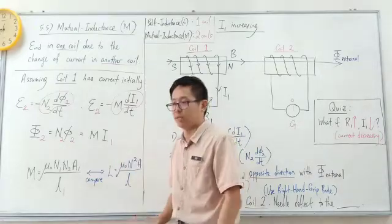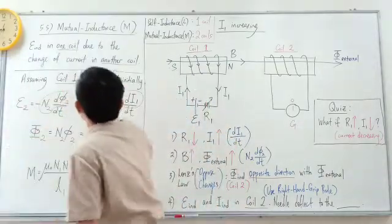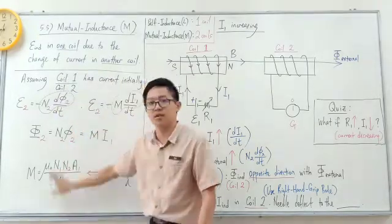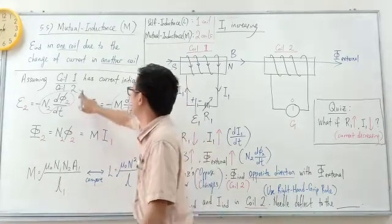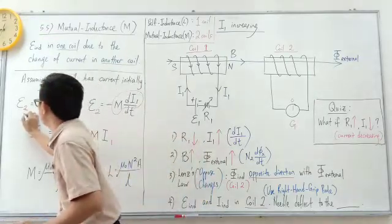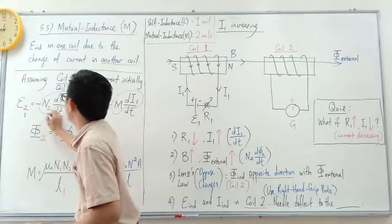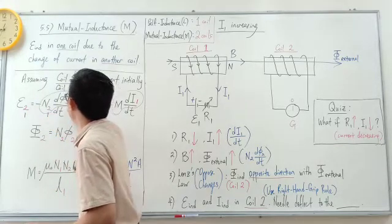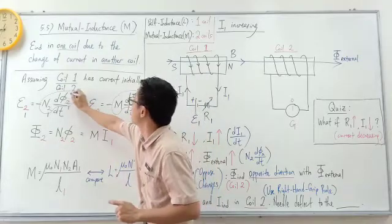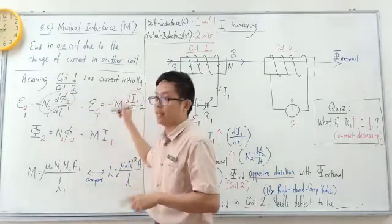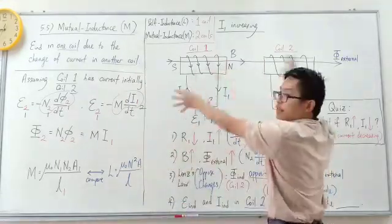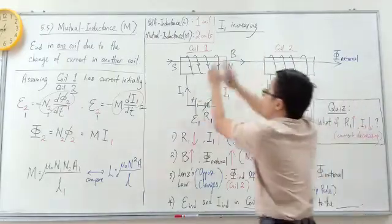In other words, we can do the vice versa. If coil two initially has the current and EMF is induced in coil one, then we adjust the formulas accordingly. The magnetic flux linkage becomes N1 times flux 1, and EMF is induced in coil one due to the change of current in coil two. Now coil two has the battery and coil one only has the galvanometer.